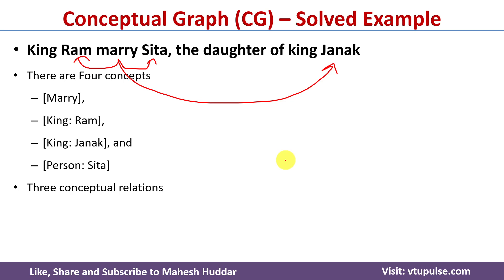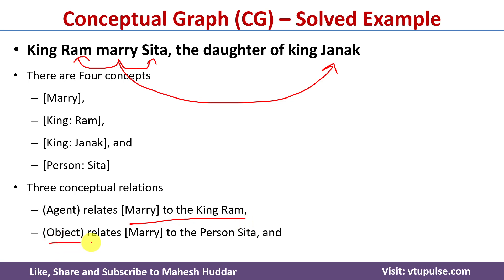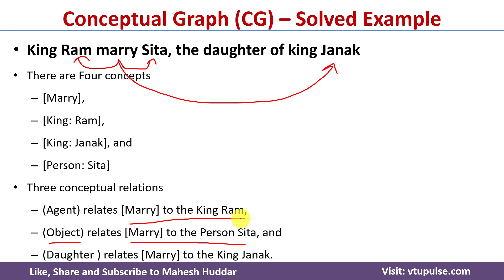There are mainly three conceptual relations. The first conceptual relation is agent, which relates Mary to King Rama. The second conceptual relation is object, which relates Mary to person Sita. And the third conceptual relation is daughter, which relates Mary to King Janaka.